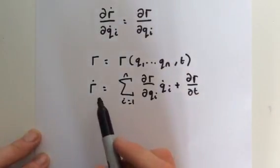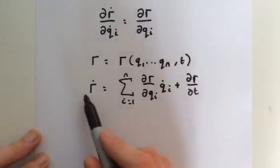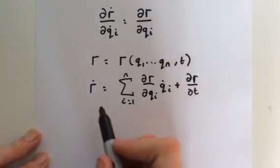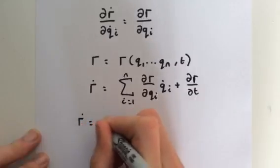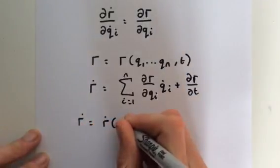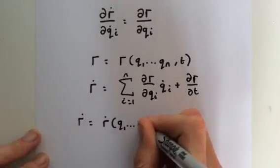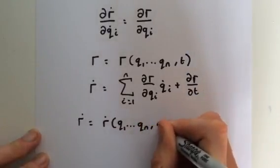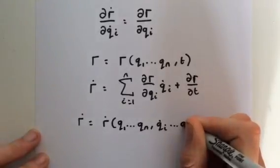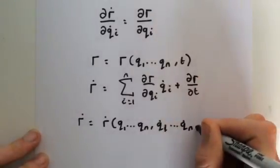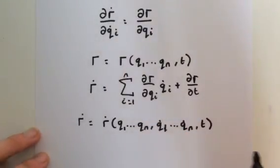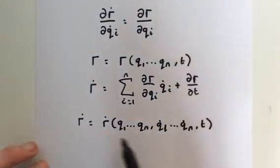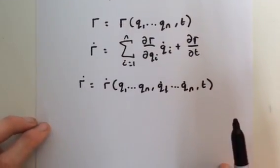We can now write the transformation equations for our velocity. We have our displacement, velocity components q dot 1 through q dot n, and time. So those are the transformation equations for our velocity — we have components of displacement, velocity, and time.